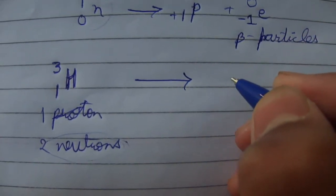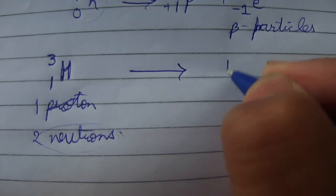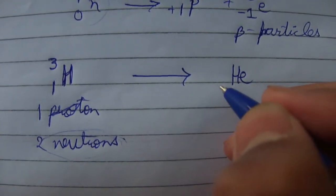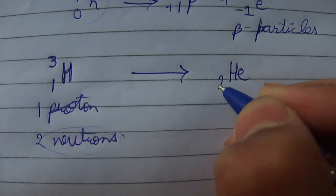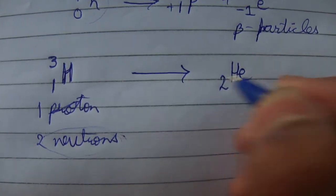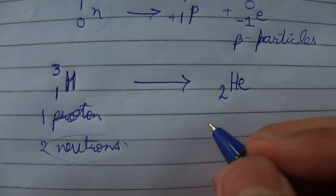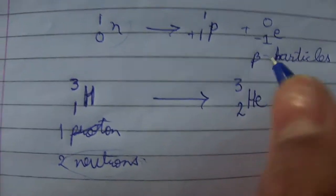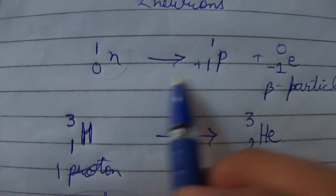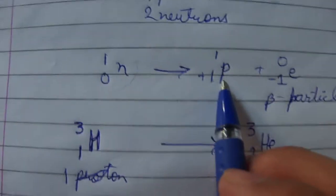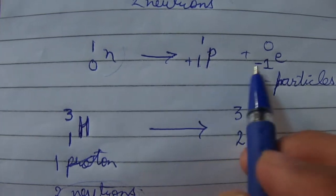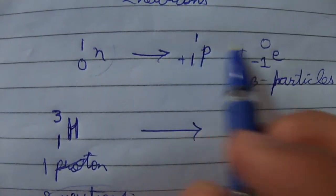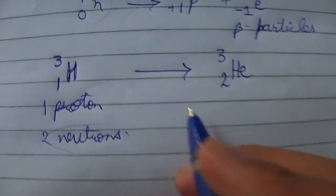The new atom now has two protons, so its atomic number is two. Since the atomic number of helium is two, the new atom formed will be helium. The mass remains the same because one neutron converts into one proton and one electron, and the electron's mass is zero while the proton's mass is one.